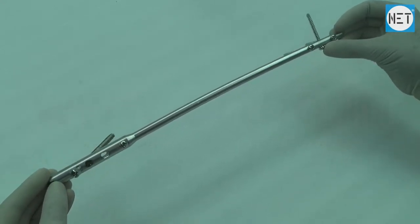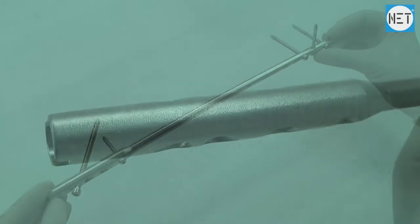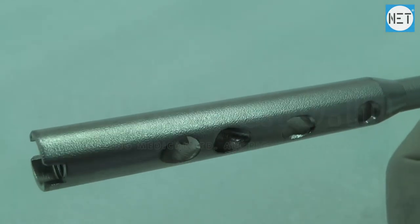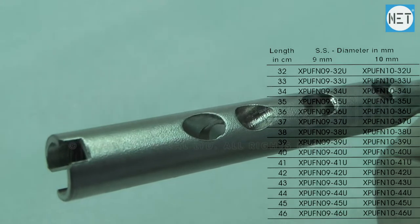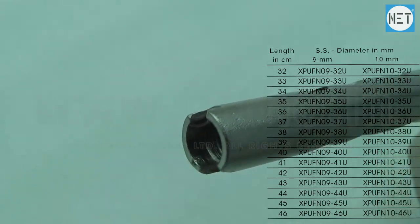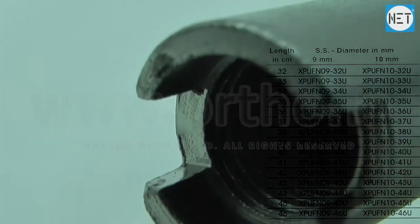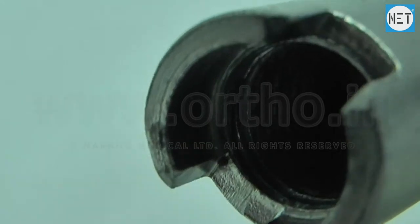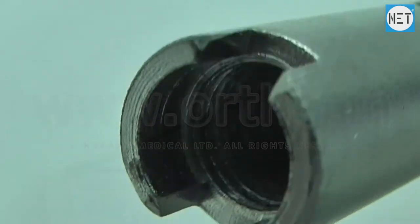The same nail can be used for right and left legs. These nails are available in lengths varying from 32 to 46 cm and in diameters of 9mm and 10mm. They are available in stainless steel and titanium.